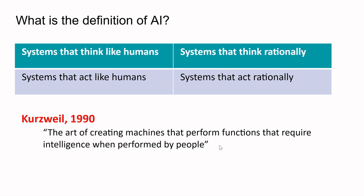The third definition is the art of creating machines that perform functions requiring intelligence when performed by people. AI is nothing but the art of creating machines that perform functions which require intelligence — the same intelligence required to perform those functions by people.